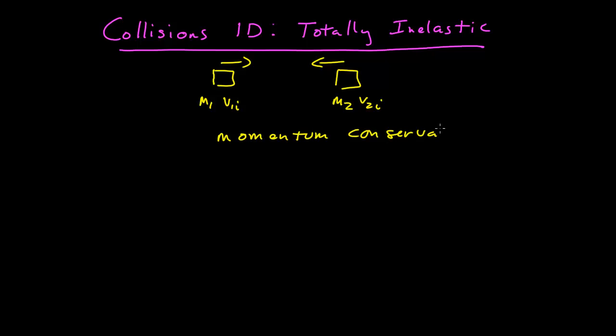So we have momentum conservation still. So we can use that to solve for what happens after the collision. And we also have that the objects stick together, which means the final velocity of 2 is equal to the final velocity of 1. We'll just call that v-final.